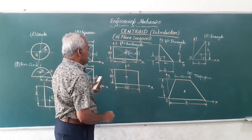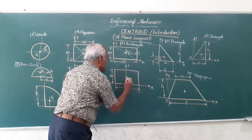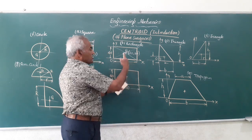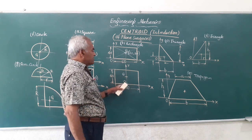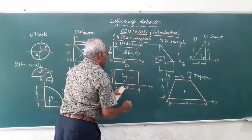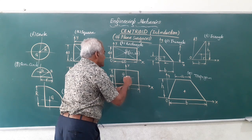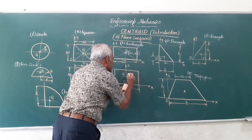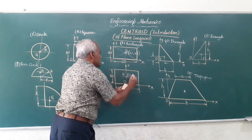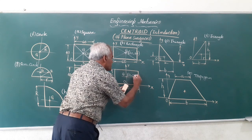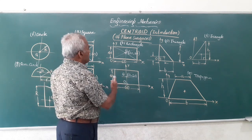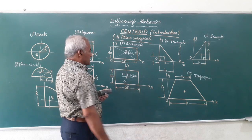For the same rectangle 60 by 40, if they ask you to locate centroid G with reference to a different origin O at the center bottom, with Ox and Oy as two mutually perpendicular directions, G lies on the Y axis, so X-bar = 0 and Y-bar = 40 by 2 = 20 mm. The location of G does not change, but the measured coordinates depend on the chosen origin and reference axes.